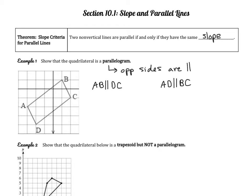There are two different ways we can find the slope with this image. One is that we can simply use rise over run. For AB, remember we always move from left to right — my rise is positive 3, my run is 4. So the slope of AB is 3 over 4, and that's the same for DC: rise is 3, run is 4, so the slope of DC is also 3 over 4. We have just confirmed that those two lines are parallel.